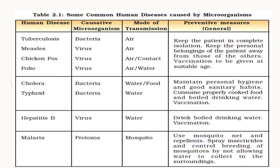This table shows some common human diseases caused by microorganisms. Number 1: tuberculosis — caused by bacteria, transmitted through air. Preventive measures include keeping the patient in complete isolation and keeping their personal belongings away from others. For four diseases — tuberculosis, measles, chicken pox and polio — we can give vaccinations at a suitable age.